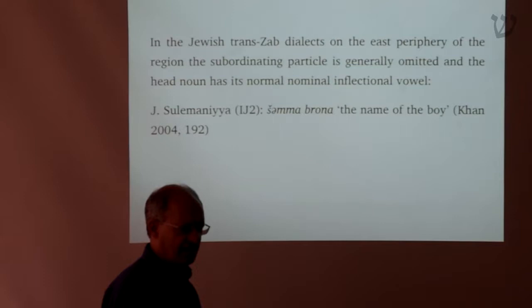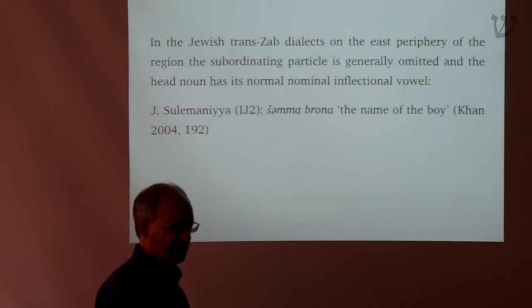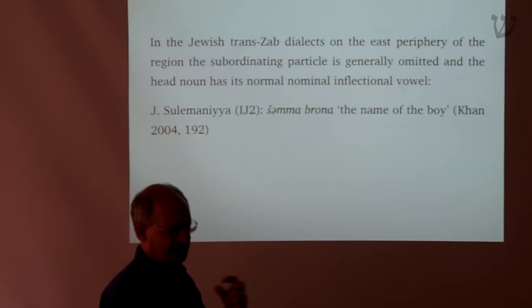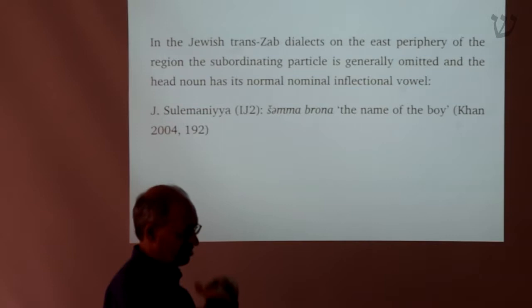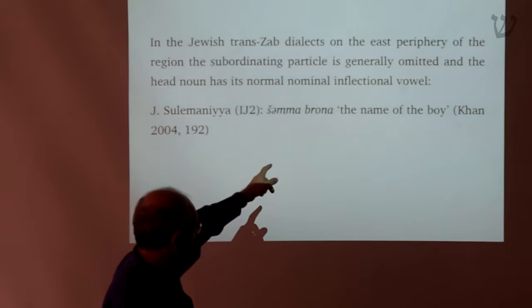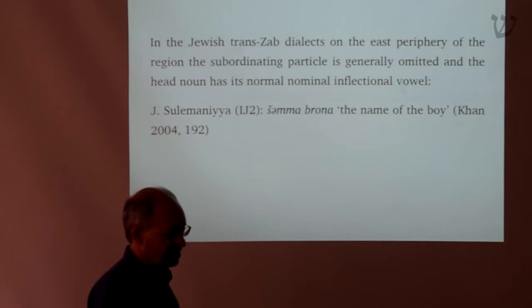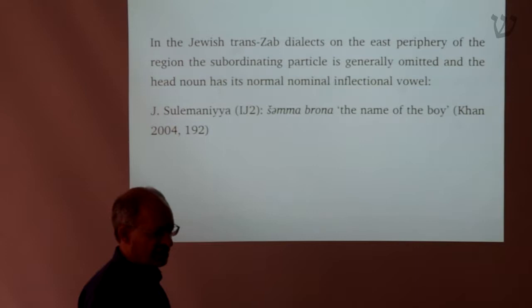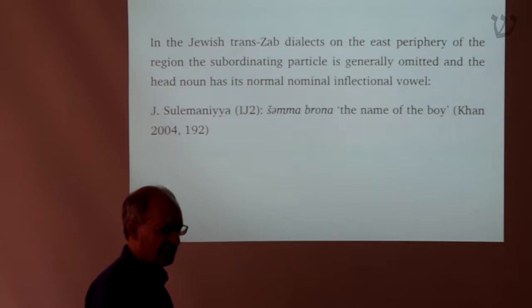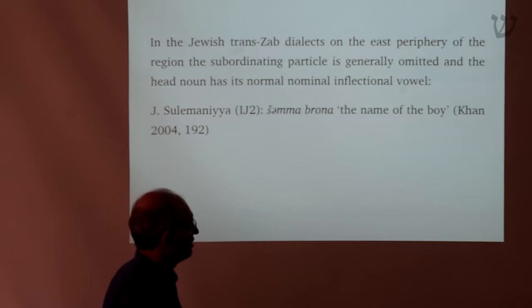The answer, as is often the case, is the situation of the languages in contact. In Kurdish, in the areas where you have a 'T' suffix to the head noun, the equivalent constructions in Kurdish would have an 'izafei' particle — a genitive particle — suffixed to the head noun. So the NENA dialects are replicating this construction. In the far east of Iraq and western Iran, there's a particular type of Kurdish where the izafei is not used. It seems this phenomenon in the NENA dialects is a replication of that Kurdish construction where you don't have an izafei.